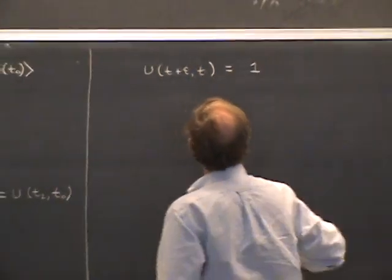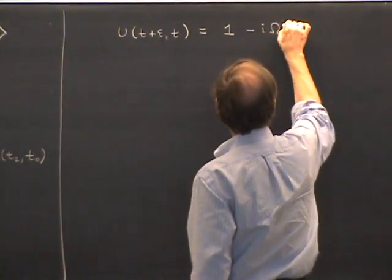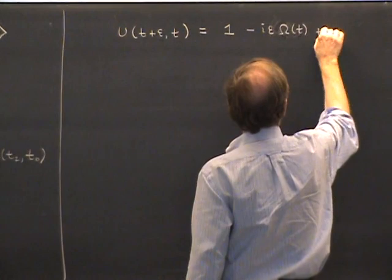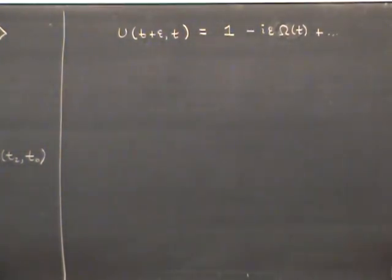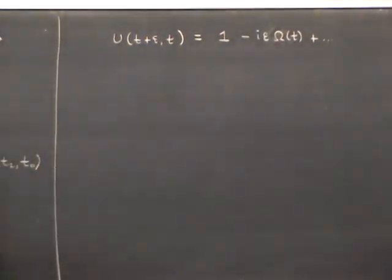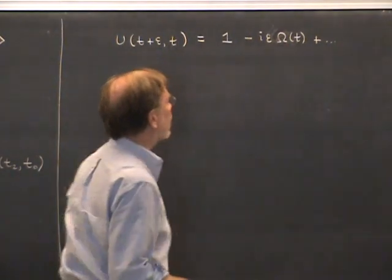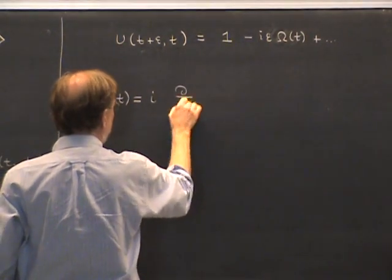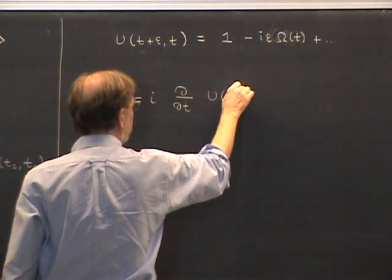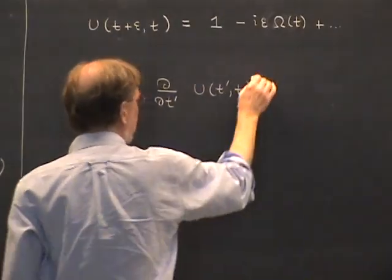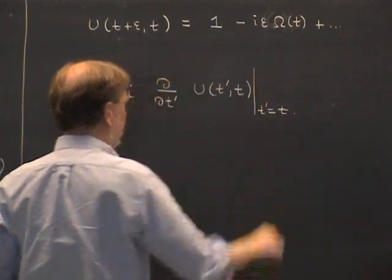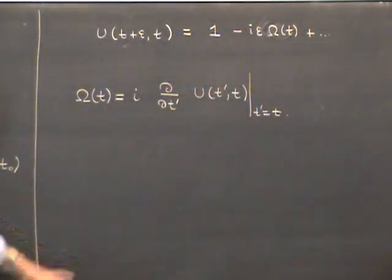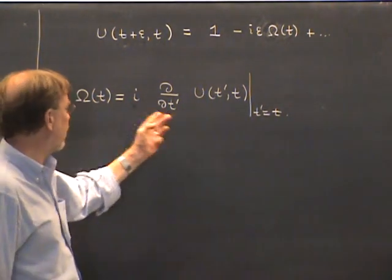For the correction term, we write it as minus i·epsilon·Omega(t), plus higher order terms in epsilon squared. By Taylor's theorem, this operator Omega is related to derivatives of U. Specifically, Omega(t) equals i times the partial derivative of U(t', t) with respect to t', evaluated at t' = t. The factor of i is factored out for convenience, and it ensures that Omega is a Hermitian operator.